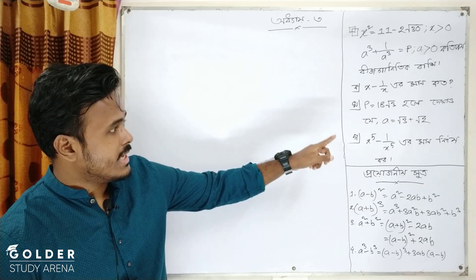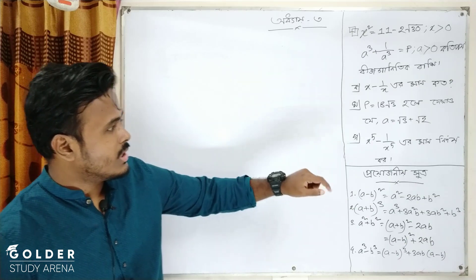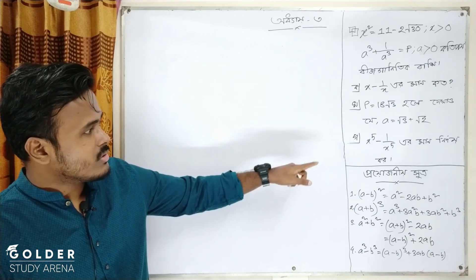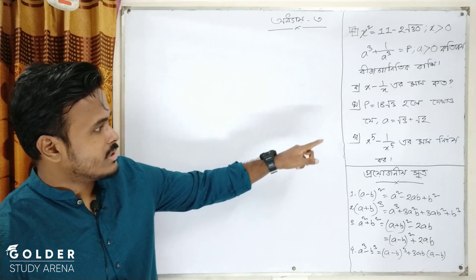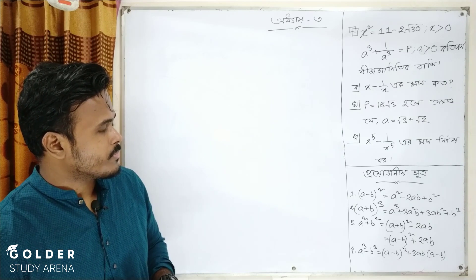Dekhao jhe a equal to root 3 plus root 2, kona mba qeshi nt e jokh x to the power 5 minus 1 by x to the power 5 er maan nirnne koro.